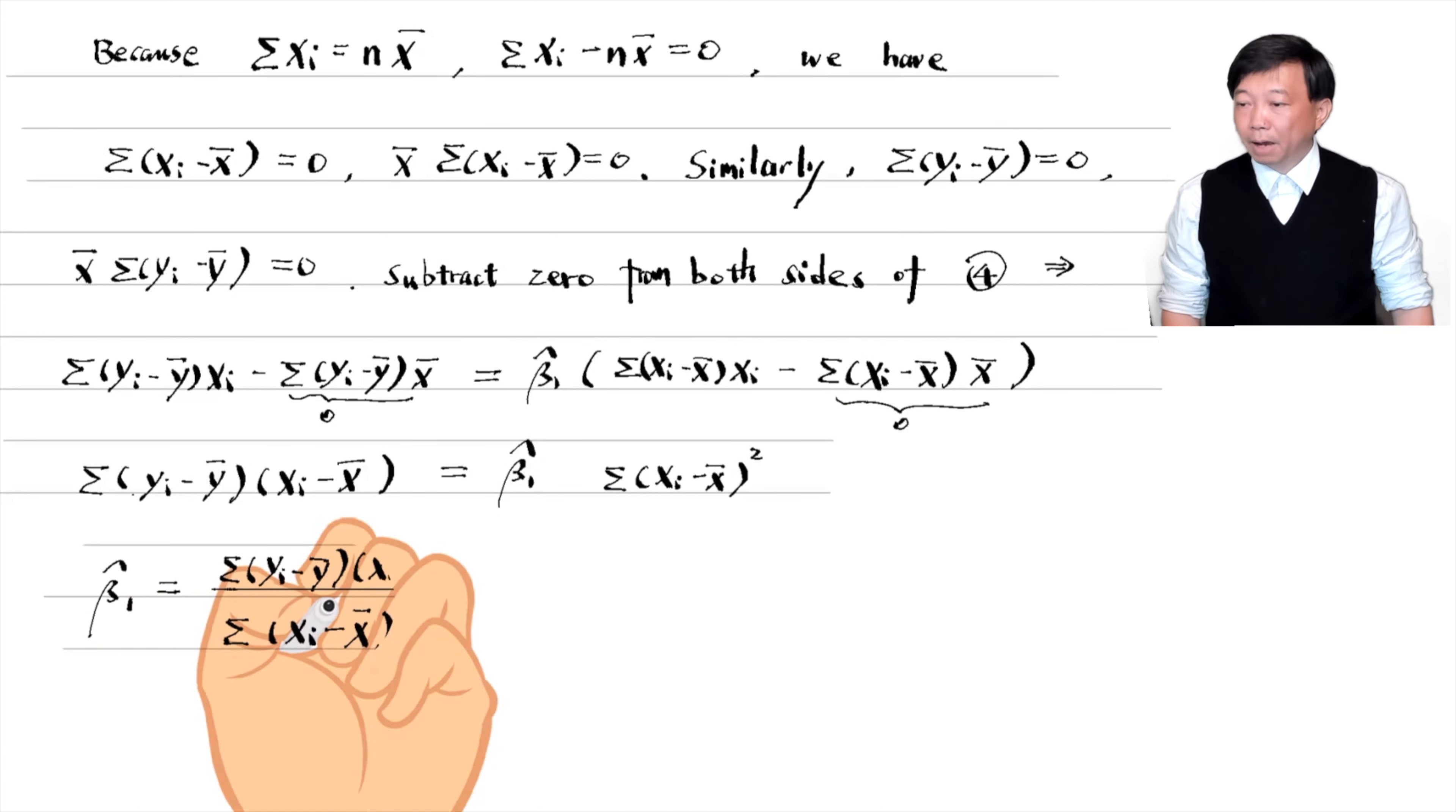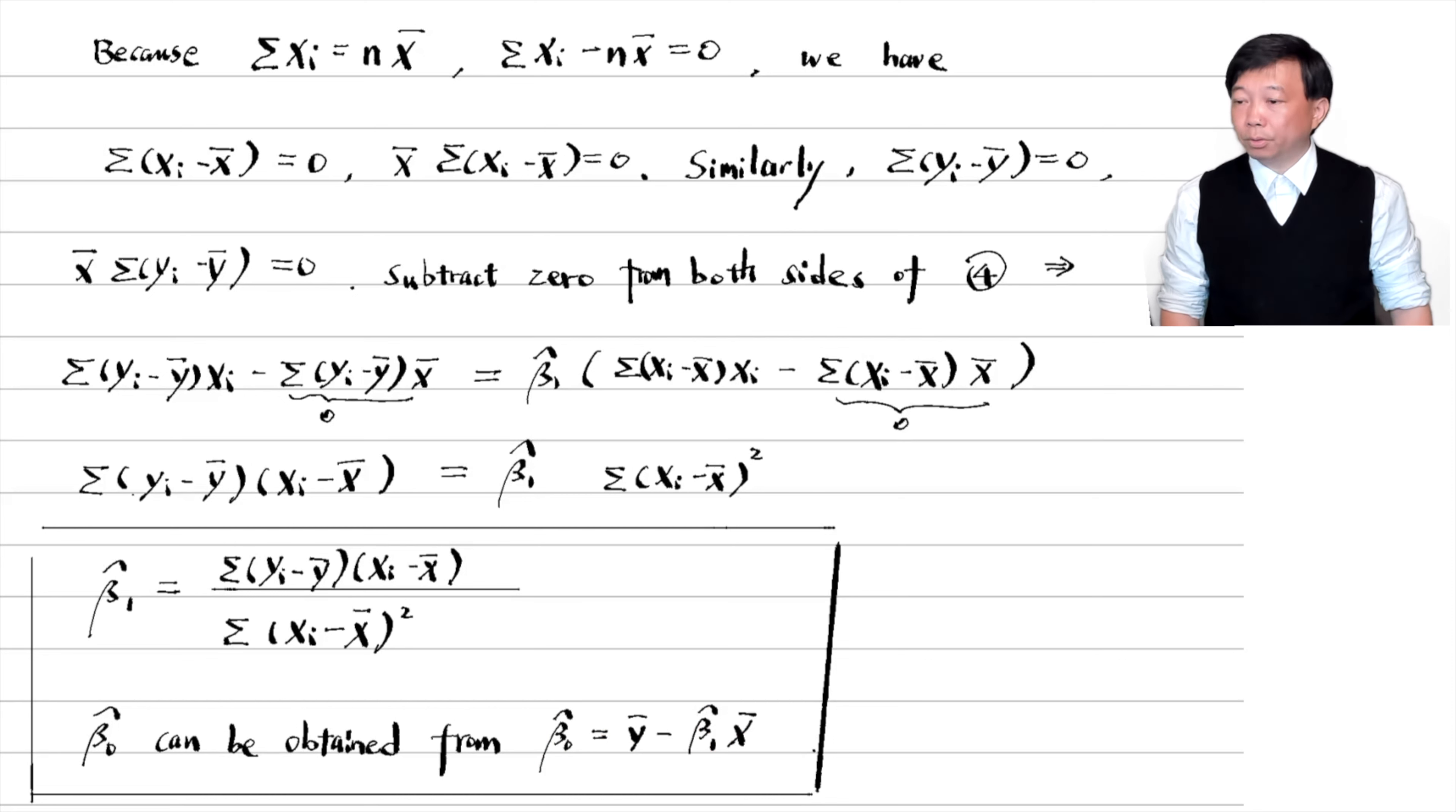Finally, we have the solution for beta 1 hat. Beta 0 hat can be obtained from equation 3. The above is the case of simple regression with one explanatory variable.